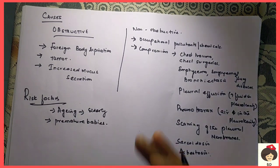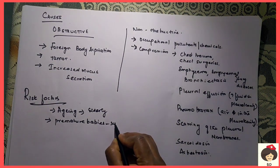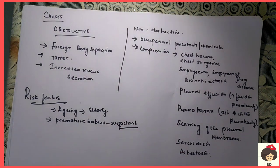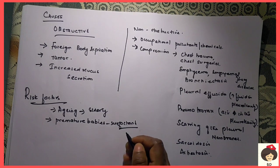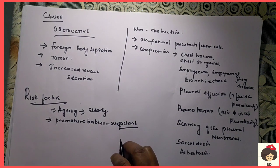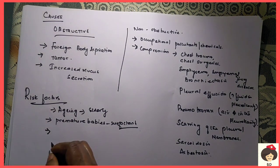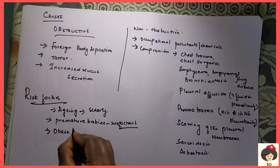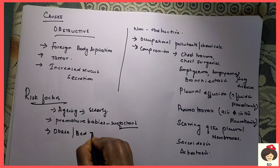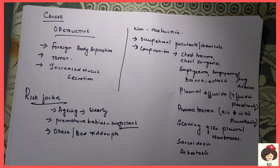Surfactant is a protein-like molecule that helps in keeping the airways open — it gives the muscular strength for alveoli to inflate and deflate. In premature babies, the surfactant may be in a lesser amount, so they can develop Atelectasis. Other conditions include obesity and being bedridden. Any bedridden patient for a long time, not doing walking or exercise, and also due to heavy weight in obesity, can compress the lungs and lead to Atelectasis.